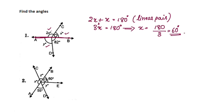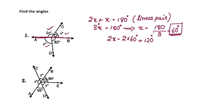So x is equal to 60 degrees. Now 2x is equal to 2 into x — the value of x is 60 degrees — so 2 into 60 degrees equals 120 degrees. Angle 2x is 120 degrees.